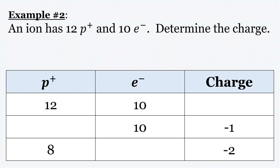Another example: an ion has 12 protons and 10 electrons. There are more protons than electrons, so the charge is positive two. For the next row, we know the charge is negative one, meaning there's one more electron. With 10 electrons, we must have nine protons — a difference of one, and since it's negative, there are more electrons than protons.